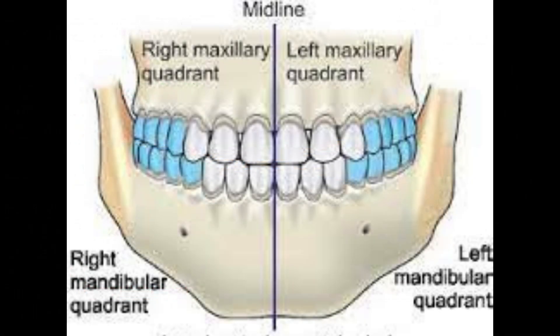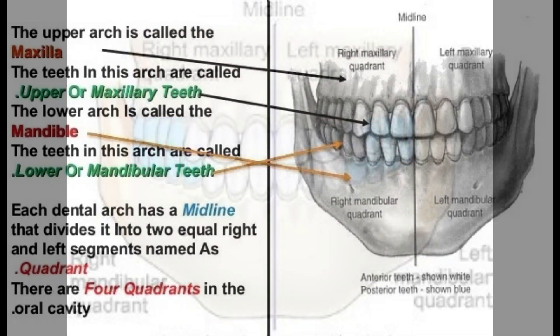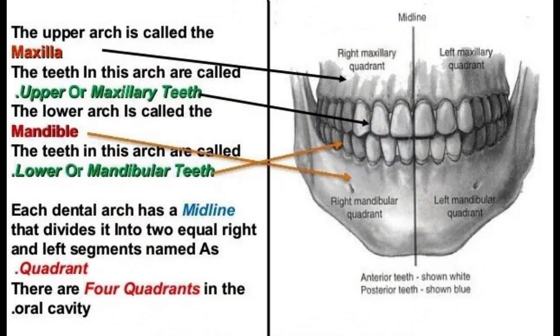An imaginary vertical line divides each arch into equal halves. This vertical line is known as the midline. The two equal portions of each arch divided by the midline are termed quadrants. There are four quadrants in the entire mouth.